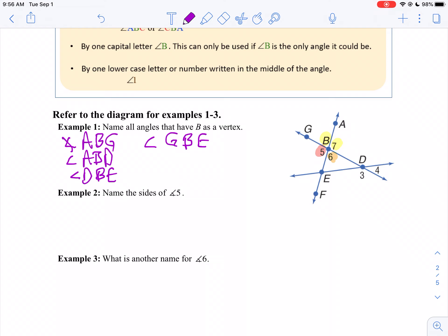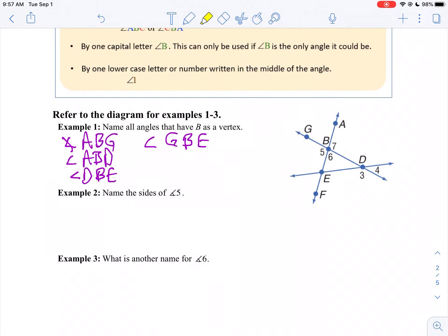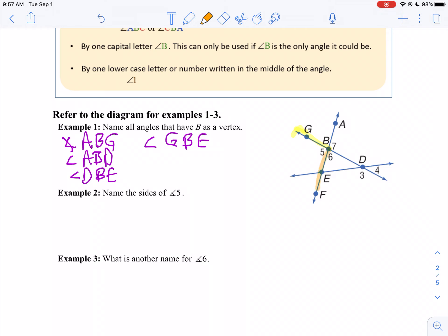Now in example 2, we want to name the sides of angle 5. Let me erase everything here. The sides are the rays of angle 5 with angle 5 as a vertex. So if I look at angle 5, one ray is BG. Another ray would be BE. So ray BG and ray BE.